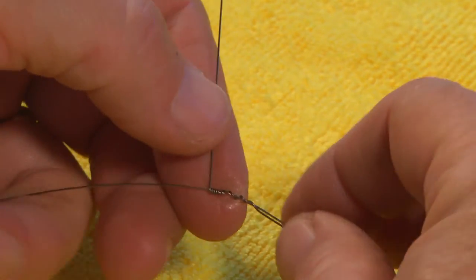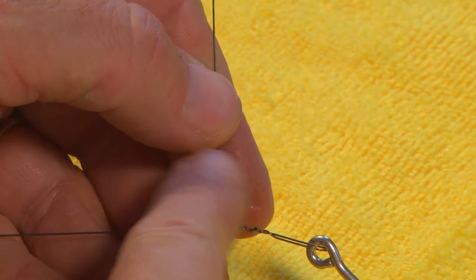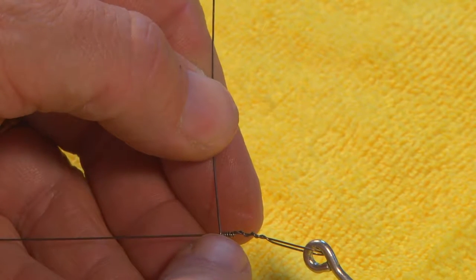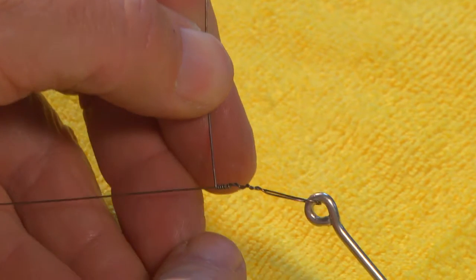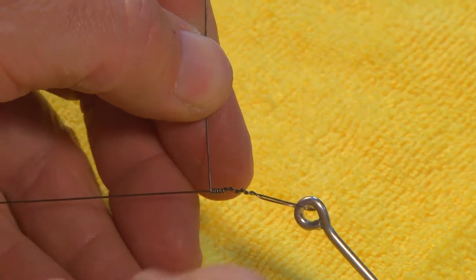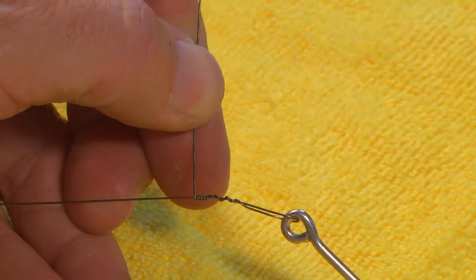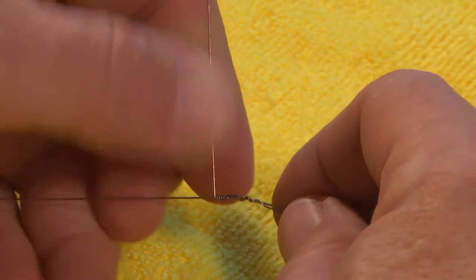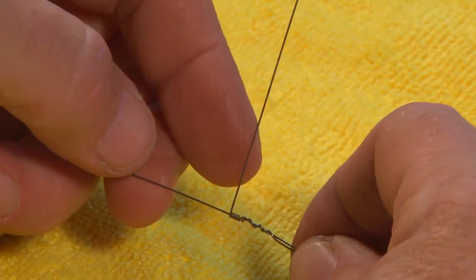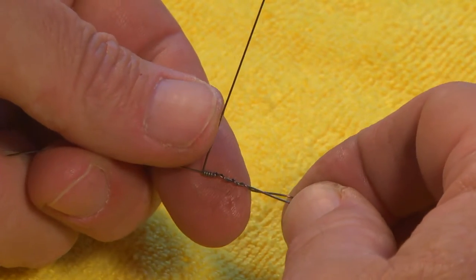Now a lot of folks would think they'll just take a pair of snips and cut this tag end off right there close to the barrel wraps. That's a no-no because you'll wind up with a little burr here that will find your forefinger or your thumb every time you handle this leader.